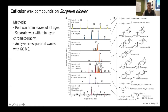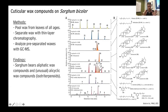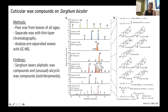This was interesting — it means that sorghum has both the typical aliphatic wax compounds that we see on a lot of plant species, but also these unusual allicyclic wax compounds. In particular, it has these isotriterpenoid structures. This isosubstituent is sort of unusual — these are some unusual compounds even among triterpenoids.